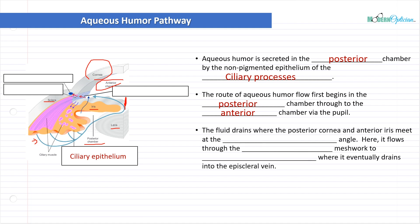Now the fluid drains where the posterior cornea, the back of the cornea, and the anterior iris, the front of the iris, meet at the iridocorneal angle. You're going to hear the term angle often. So that's the little area, that little wedge. This area here, this spot here is the angle.